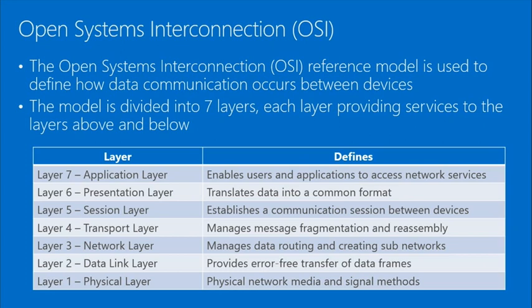Layer seven, the application layer, enables users and applications to access network services. People get confused thinking this is the program they use — it's not. It's the protocol the program uses to access network services. Layer six, the presentation layer, translates data into a common format — for example ANSI versus EBCDIC, different data representation formats.